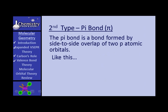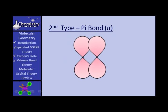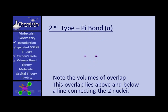Now let's look at a pi bond. A pi bond is a bond formed by side-to-side overlap of two P atomic orbitals. You have the two P orbitals — they collide, you see where the overlap occurs, and you get two volumes of overlap. The pi bond is those two areas of overlap. It takes both of those together to make a pi bond. They lie above and below the line connecting the two nuclei.